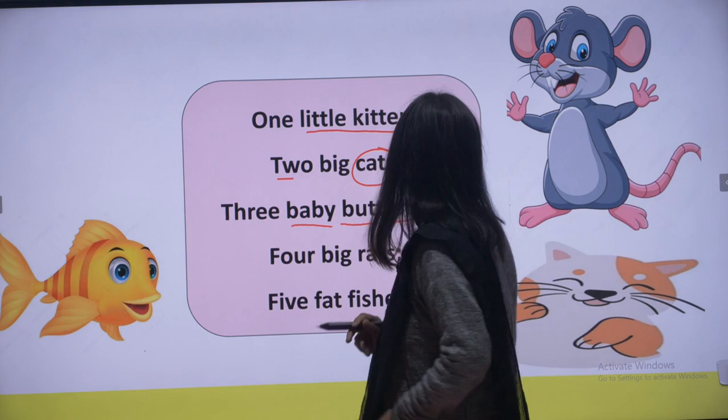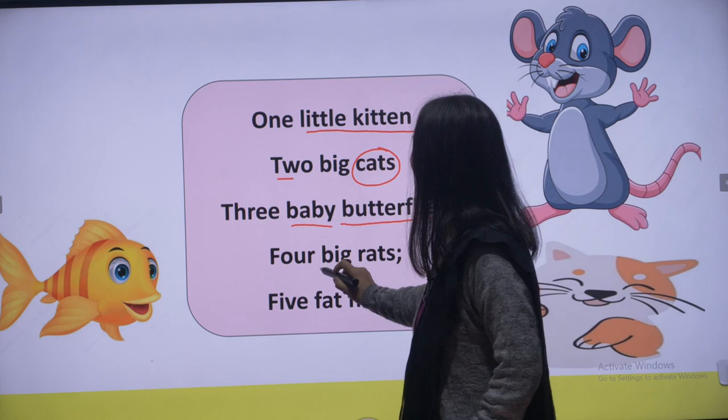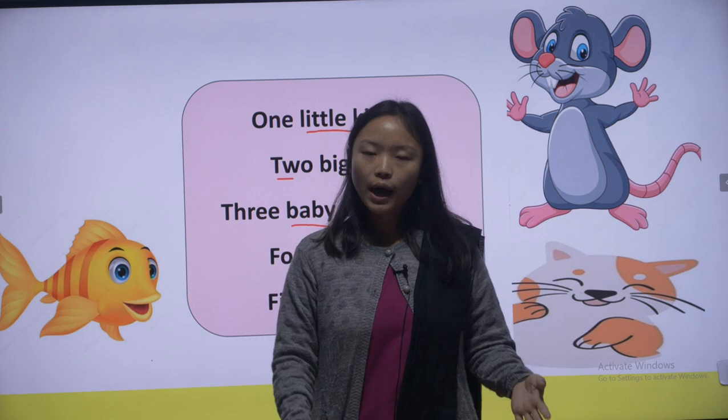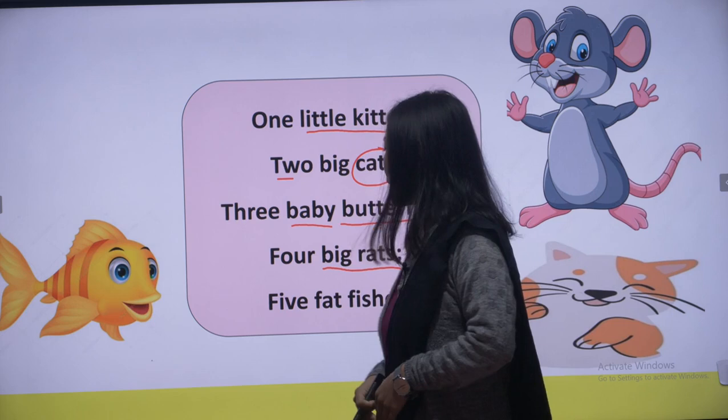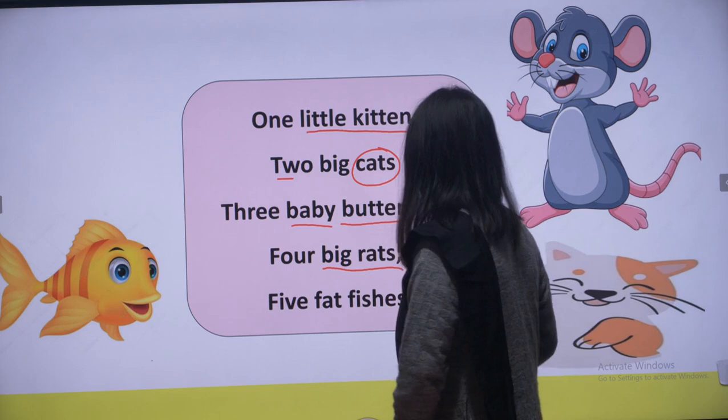Four big rats — there are four big rats. 'Rats' means a mouse. So four big rats. Next is five fat fishes — there are five fish and they are fat. 'Fat' means mota. So five fat, mota fish.